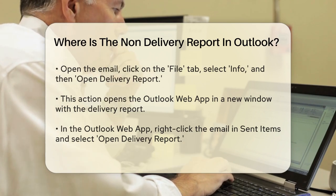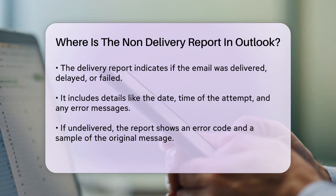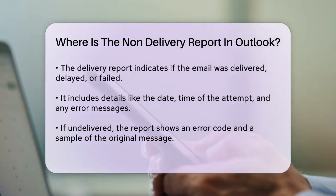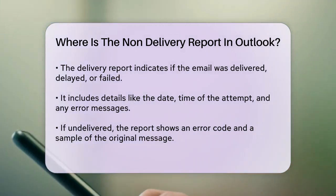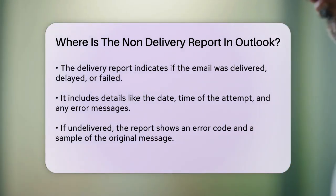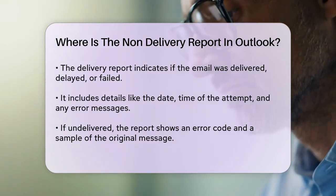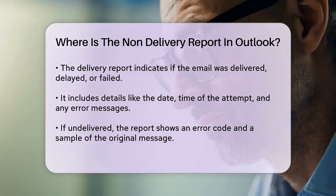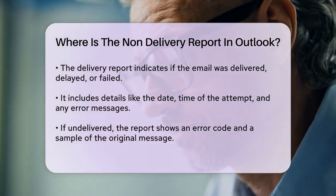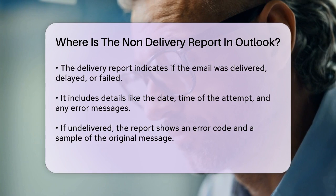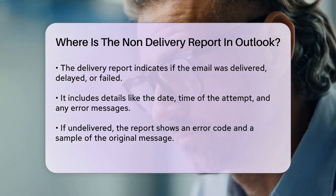Now let's dive into what you can see in this report. The delivery report shows you whether the email was delivered, delayed, or failed to reach the recipient. It also provides details like the date and time of the attempt and any error messages that might have occurred.